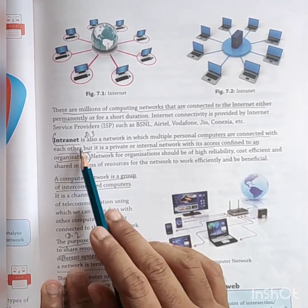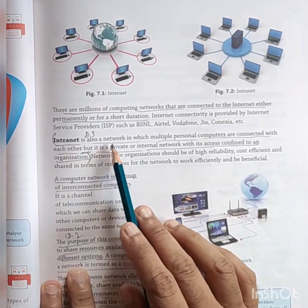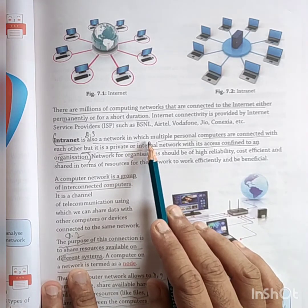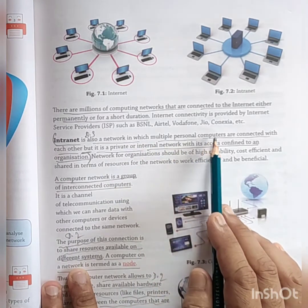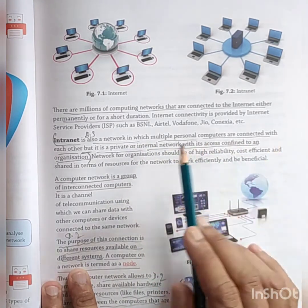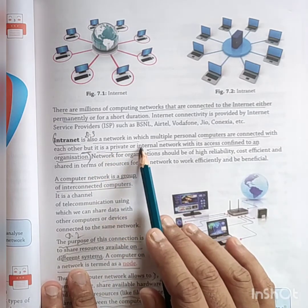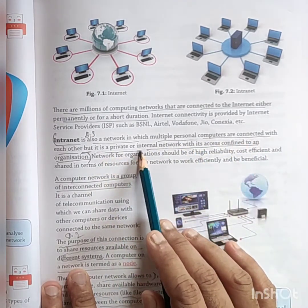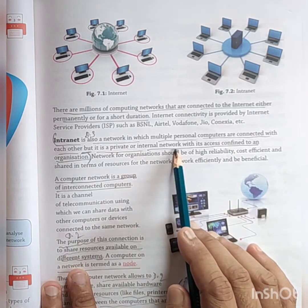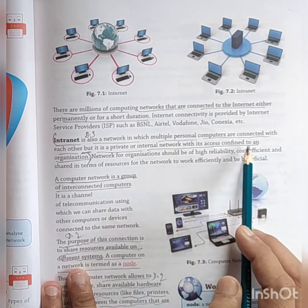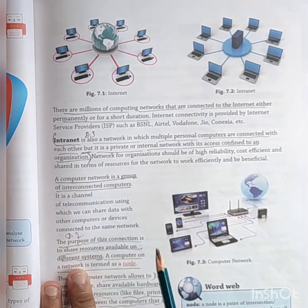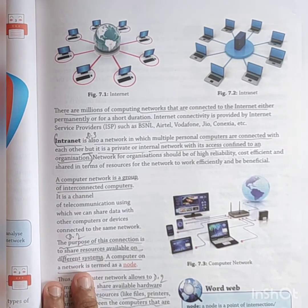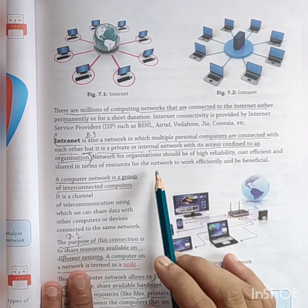Now, intranet. Intranet is also a network in which multiple personal computers are connected with each other. But it is a private network with its access confined to an organization — it is for a particular purpose. For an organization, it is a private network.